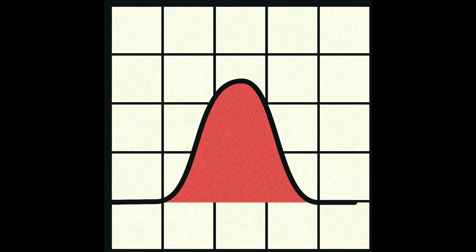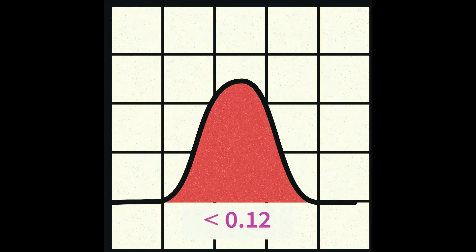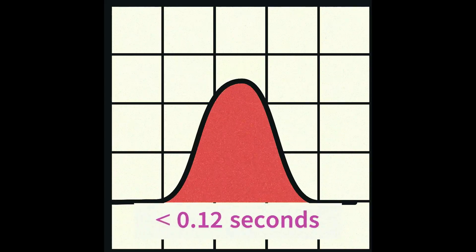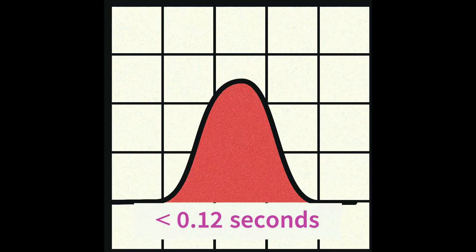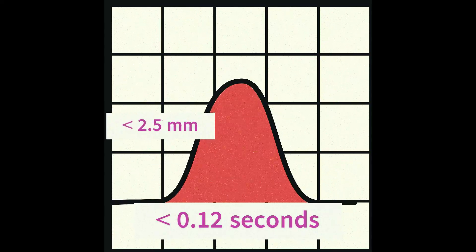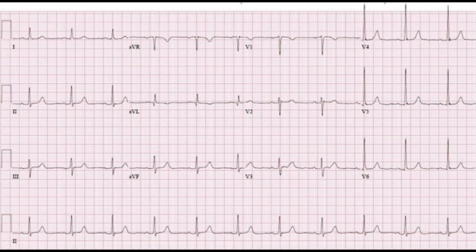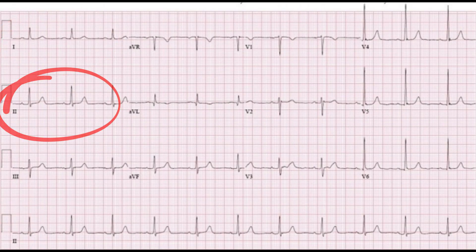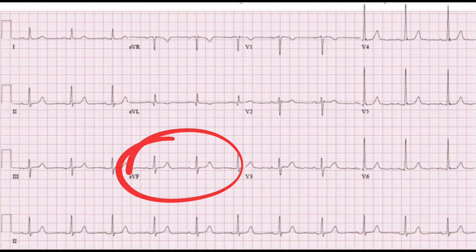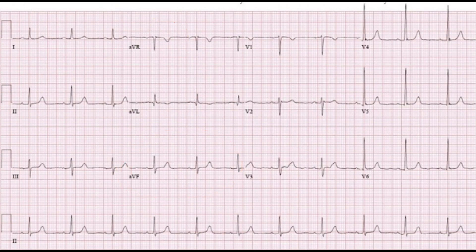Normal P-Waves typically have a duration of less than 0.12 seconds, or less than three small squares, and an amplitude of less than 2.5 millimeters, or less than two and a half small squares. They are usually upright in leads 1, 2, and AVF, but may be inverted in AVR.